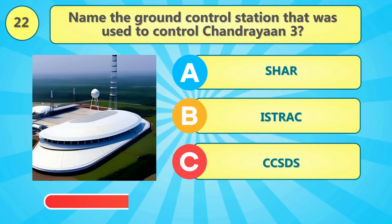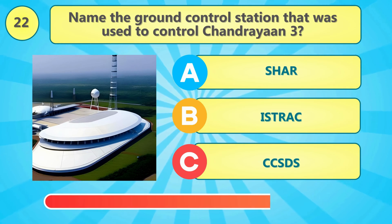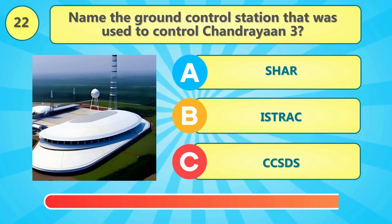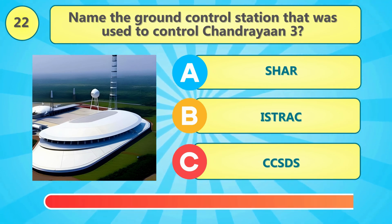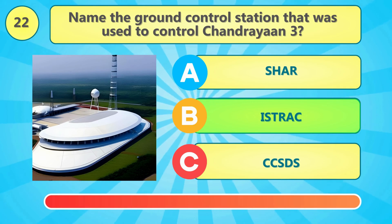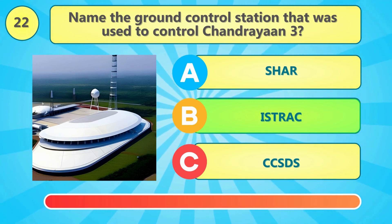Name the ground control station that was used to control Chandrayaan 3. The correct answer is option B.